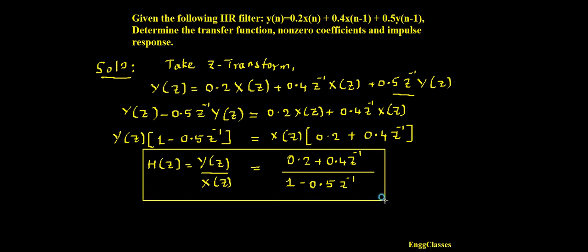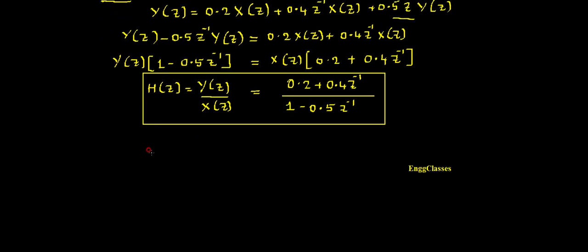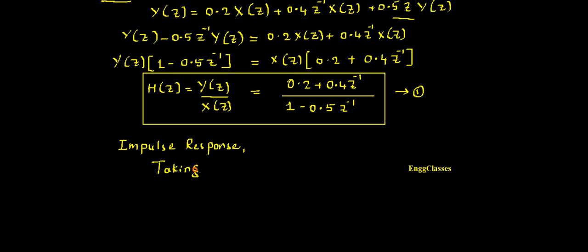Let me put the transfer function in a box. We were looking for the transfer function and we have found it. Now I can get the impulse response straight away by taking the inverse Z-transform of H(Z). Let me call the transfer function equation as equation number 1.